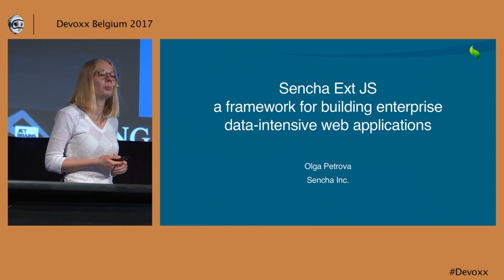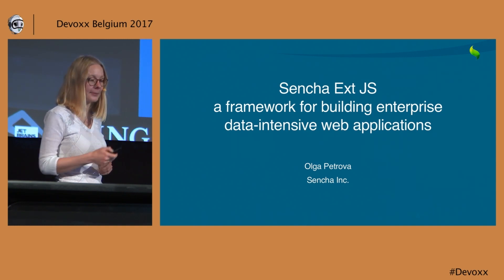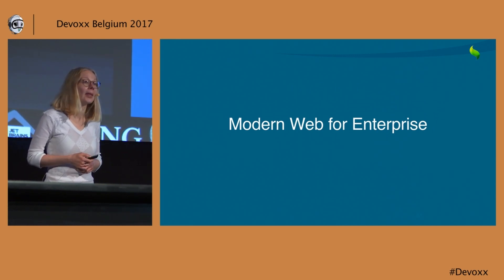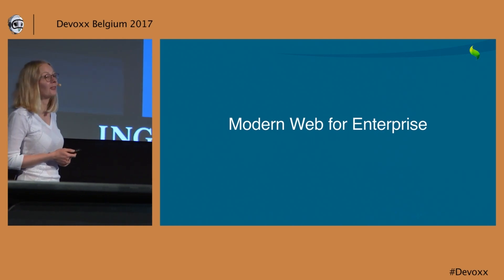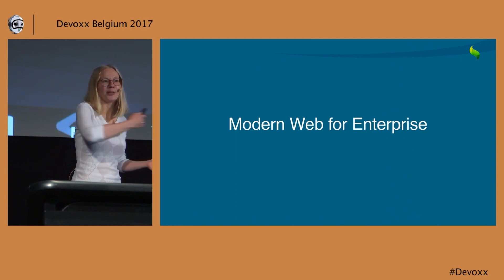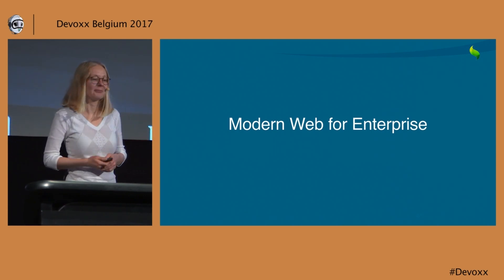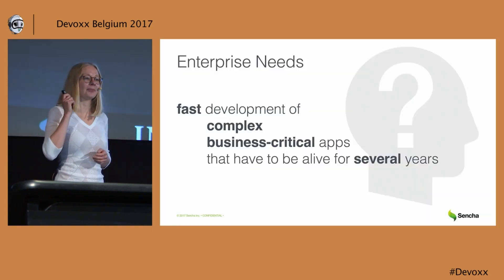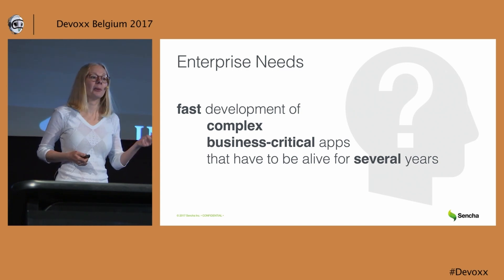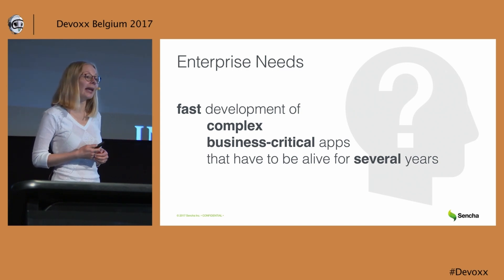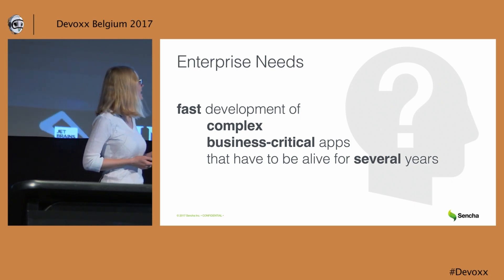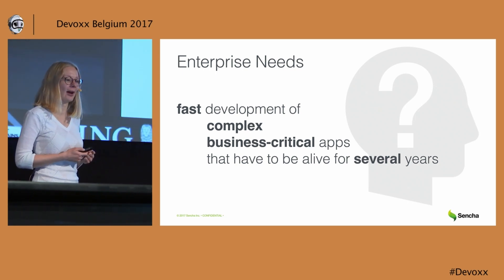Ext.js is a JavaScript framework for building enterprise data-intensive web applications. This track is called Modern Web, and I would like to talk to you about Modern Web for Enterprises. You may wonder why — what is the difference between Modern Web in general and Modern Web for Enterprises? The difference is that enterprises have special requirements, and every word in this definition is important.